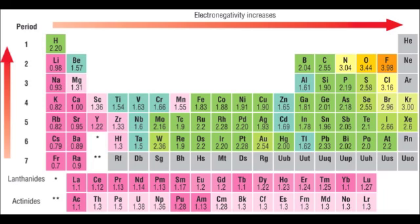Here's a periodic table of elements to display this trend in electronegativity. As you can see on the top right, fluorine is the most electronegative with a value of 3.98, whereas francium is the least electronegative with a value of 0.7. These values are based on a scale relative to hydrogen, which is always 2.2, giving a standardized scale to work out which atom is more electronegative than the other.